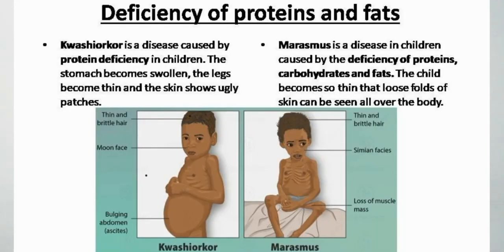If there is a deficiency of proteins and fats, two diseases can occur: kwashiorkor and marasmus. Kwashiorkor is a disease caused by protein deficiency in children — the stomach becomes swollen, the legs become thin, and the skin shows ugly patches. If not treated in time, the mental and physical growth of the child slows down. Marasmus is caused by deficiency of protein, carbohydrates, and fats in children — the child becomes so thin that loose folds of skin can be seen all over the body.